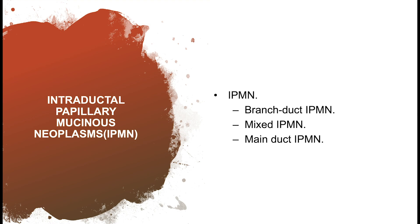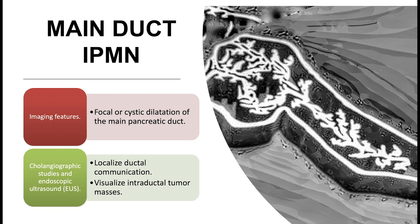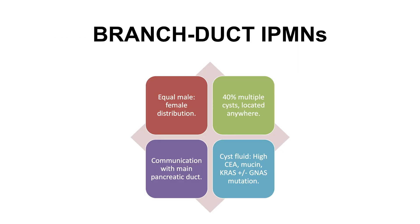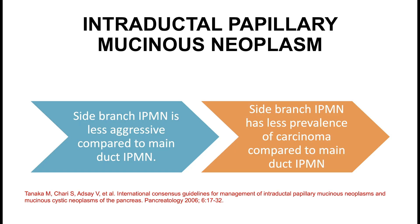An illustration shows branch duct and main duct types of IPMN. IPMNs are broadly classified into branch duct, mixed duct, and main duct types. In main duct IPMN, there will be focal or cystic dilatation of the main pancreatic duct. It is important to localize the ductal communication, and ERCP helps visualize intraductal masses. As compared to main duct IPMNs, which are very common in the body region, branch duct IPMNs can occur anywhere; establishing communication with the main pancreatic duct is important.